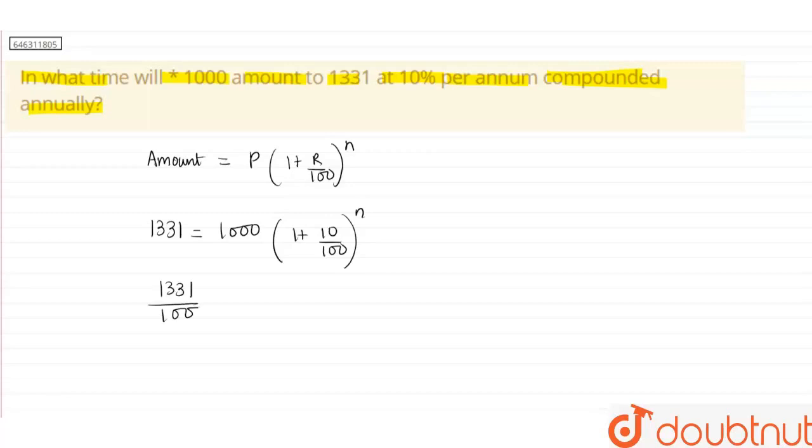So, this becomes 1,331 divided by 1,000 and this becomes 11 by 10 to the power n. It gets cancelled here and this becomes 11 by 10 to the power n.